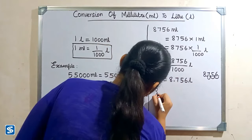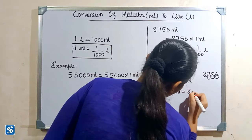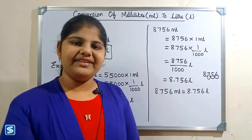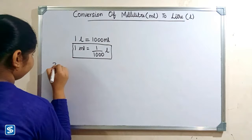So eight thousand seven hundred and fifty-six milliliters is equal to eight point seven five six liters. Next we will take one more example.